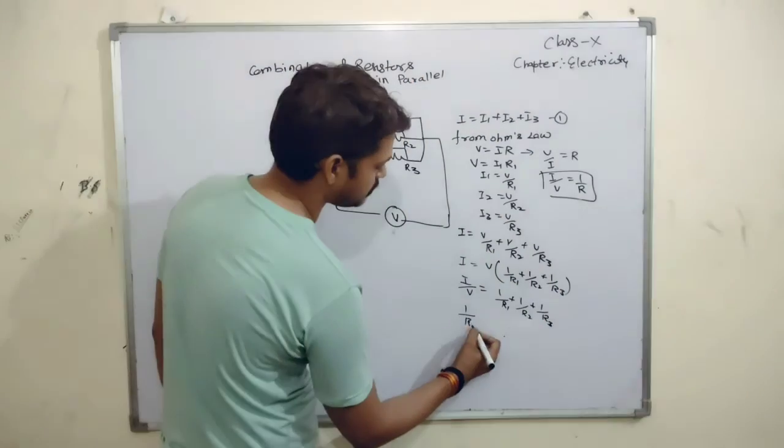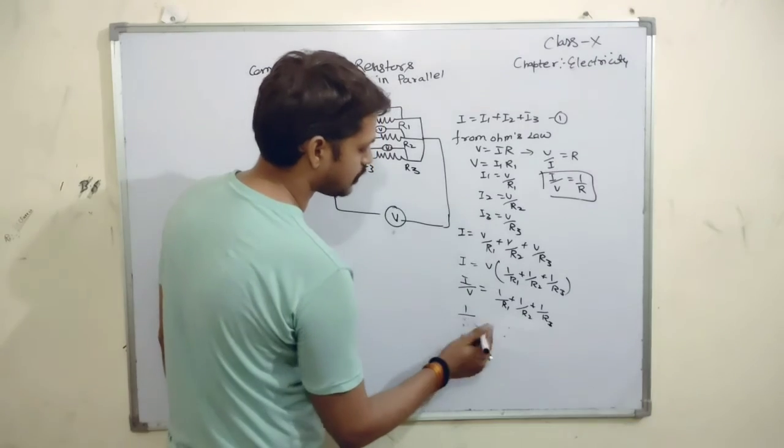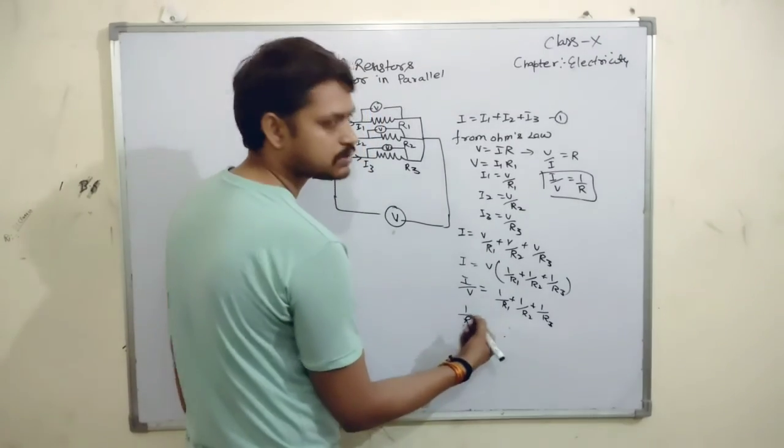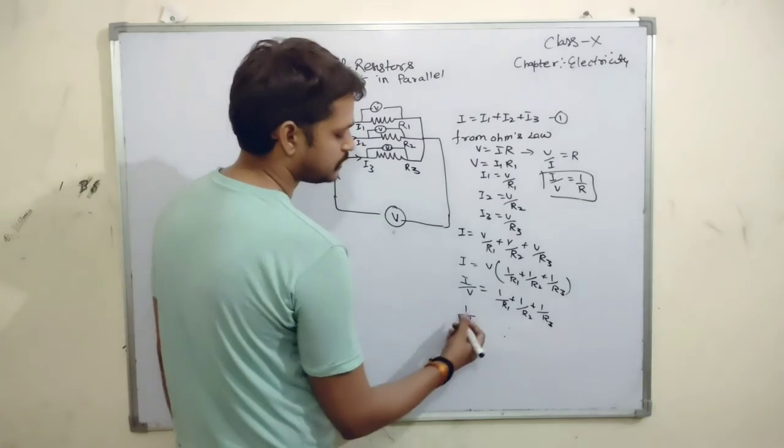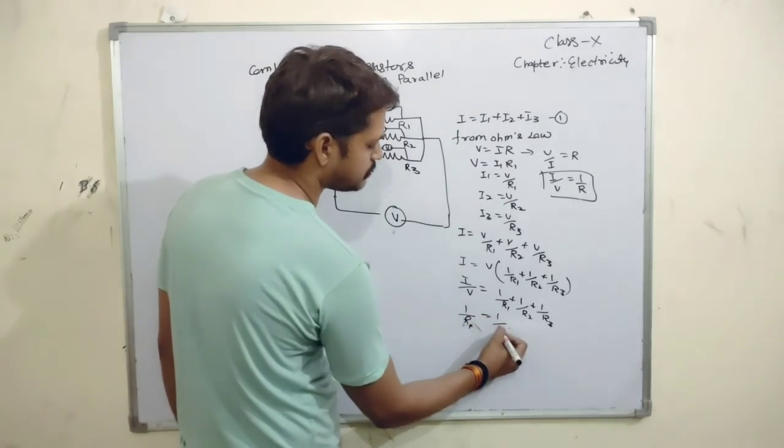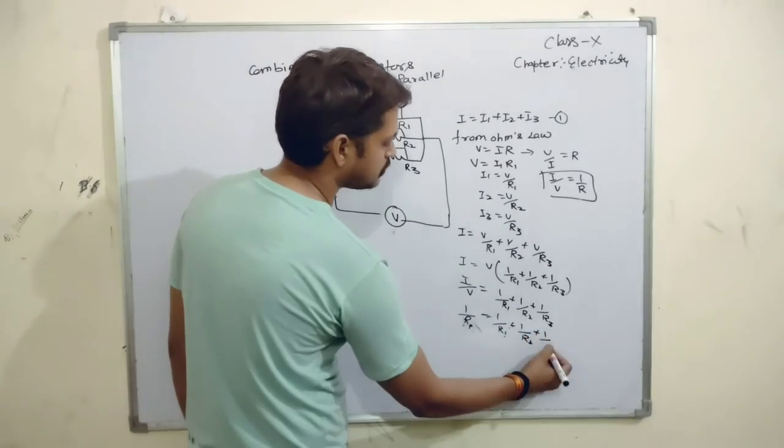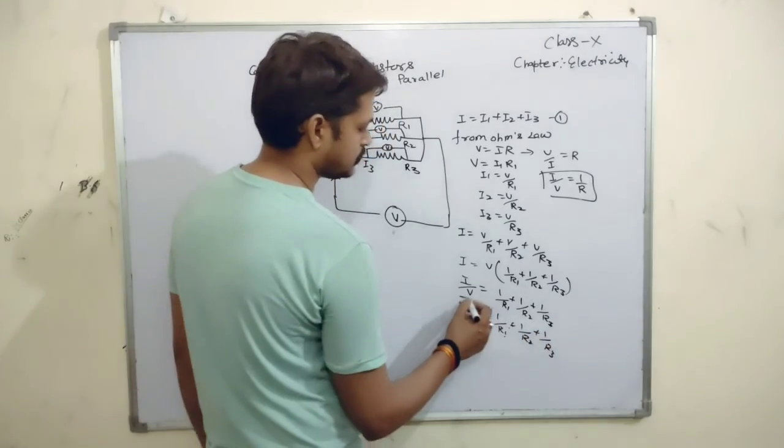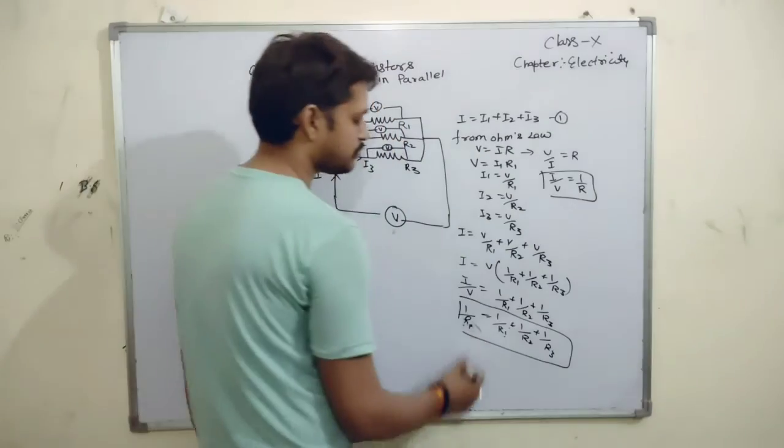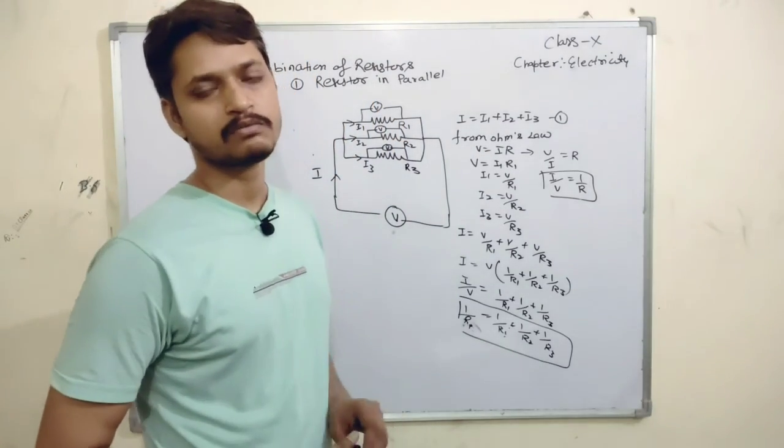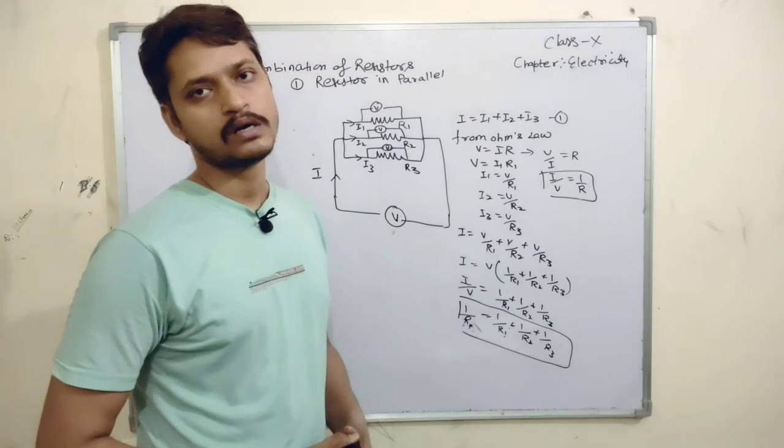We will use this formula here. We will have 1 by Rp, say parallel combination. Rp, P represents simply parallel. This is subscript. R is resistance. Total resistance will be equal to 1 by R1 plus 1 by R2 plus 1 by R3. If the resistors are combined in parallel, total resistance can be given by reciprocal of 1 by R1 plus 1 by R2 plus 1 by R3. Thank you.